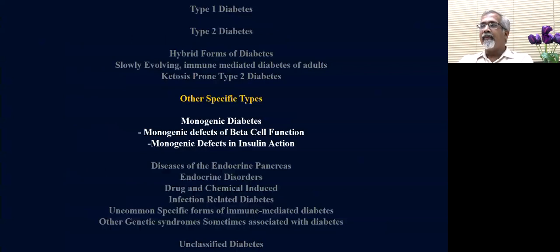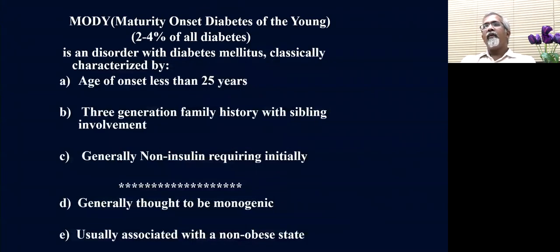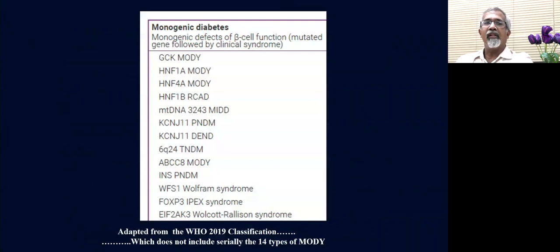Let me turn to the monogenic forms of diabetes. MODY is classically thought to have an age of onset less than 25 years, three-generation family history, sibling involvement, and generally non-insulin requirement. They are thought to be monogenic and usually associated with a non-obese state. If you look at the latest WHO classification, not all 14 types are cited, largely because some patients are not found to be typically MODY in certain subgroups.